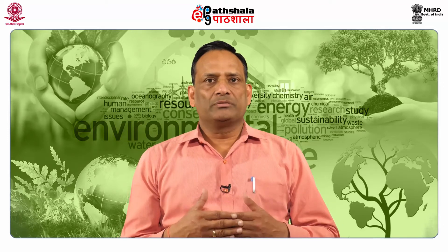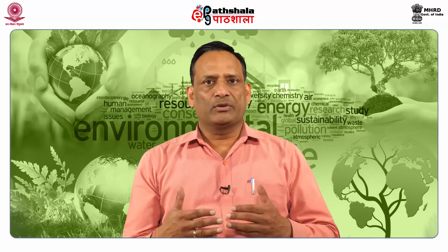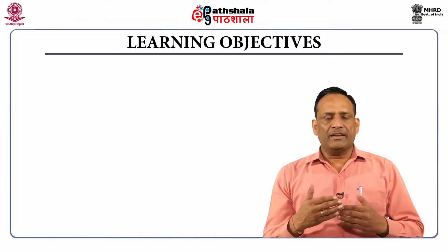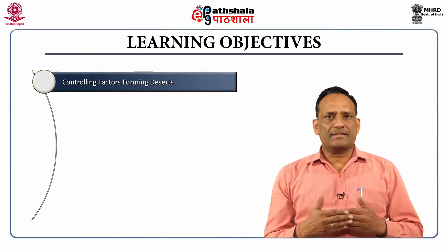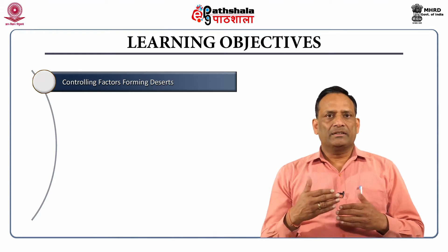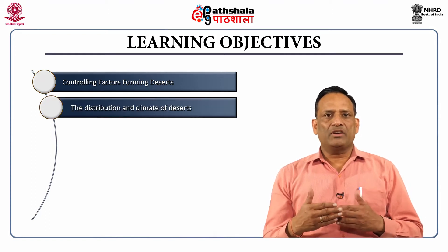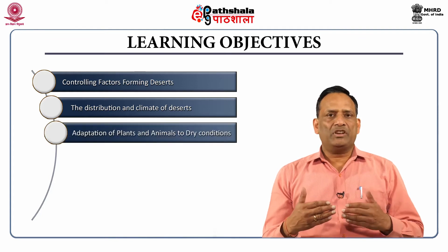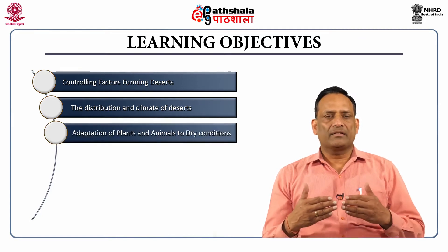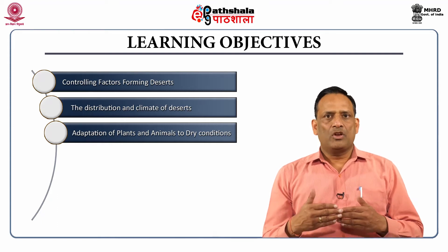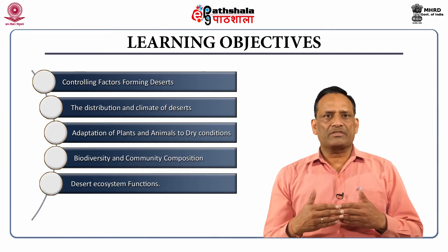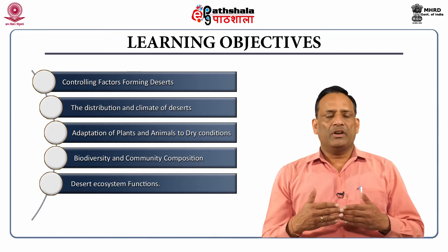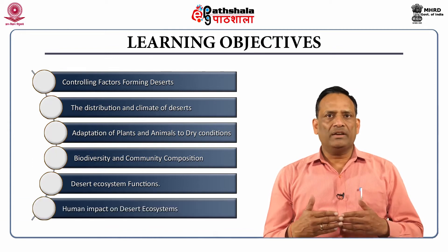In this module, we shall be studying about desert ecosystem in detail. The learning objectives of this module are: controlling factors forming deserts, the distribution and climate of deserts, adaptation of plants and animals to dry conditions, biodiversity and community composition, desert ecosystem functions, and human impacts on desert ecosystems.